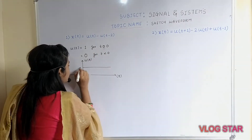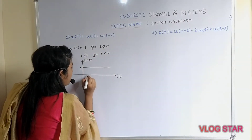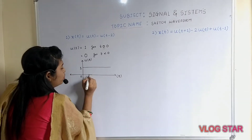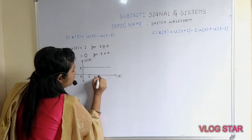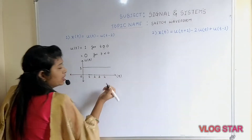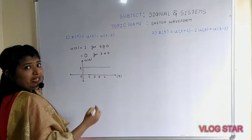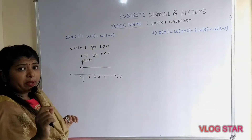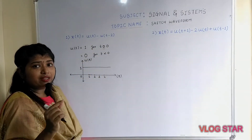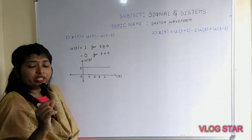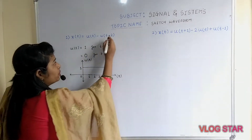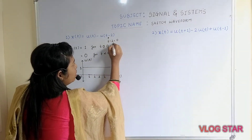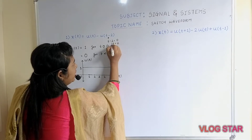This is the representation for u(t). Similarly, you need to plot u(t − 2). To plot u(t − 2), first you have to set t − 2 = 0.